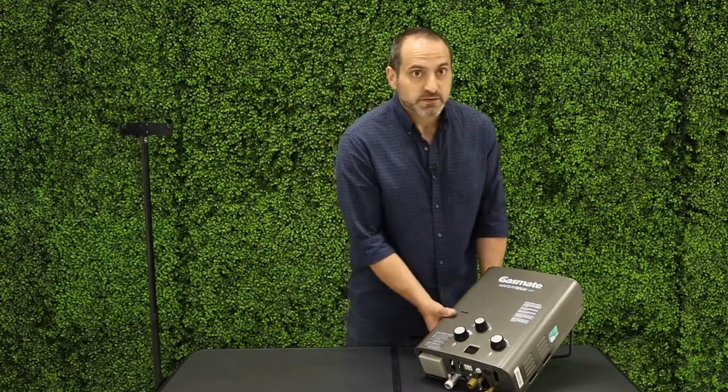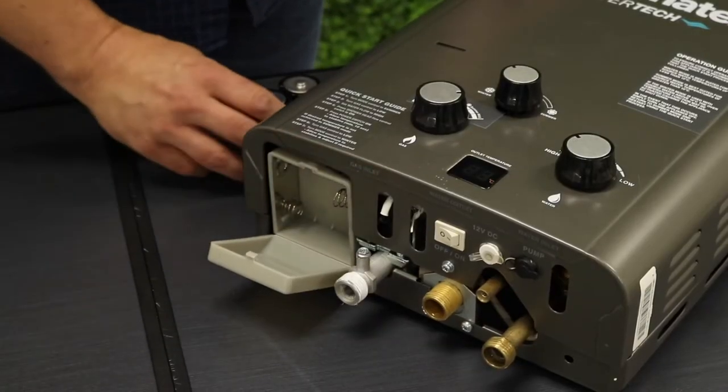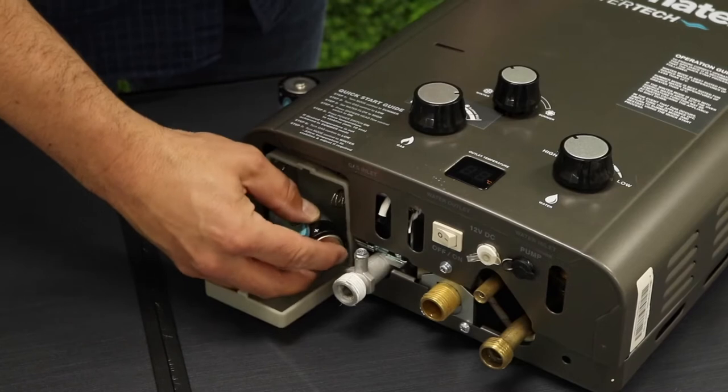Start by inserting the two D cell batteries. These are used to power the electronic ignition.